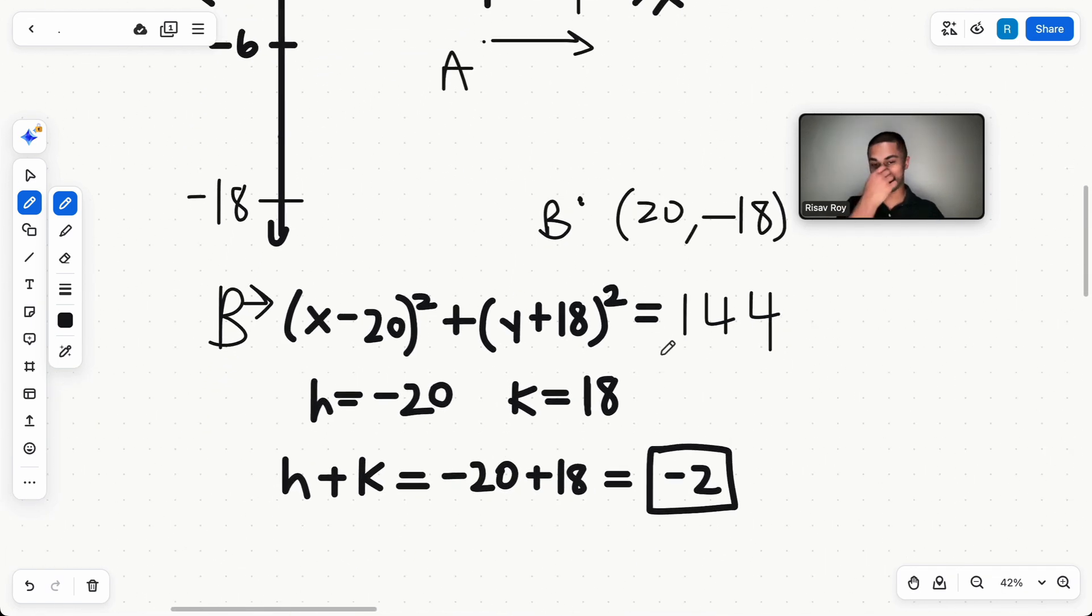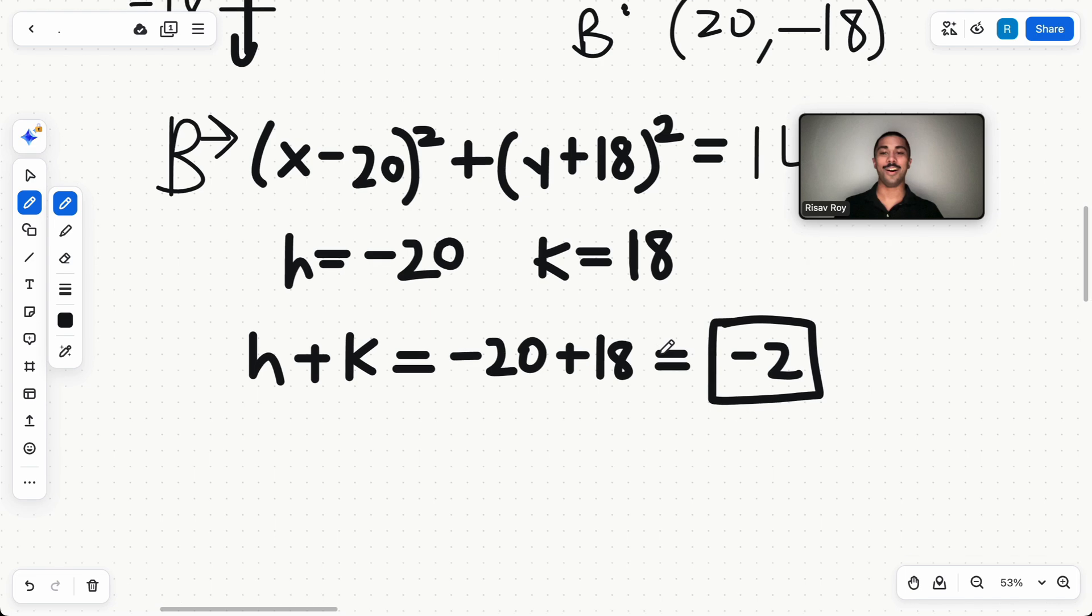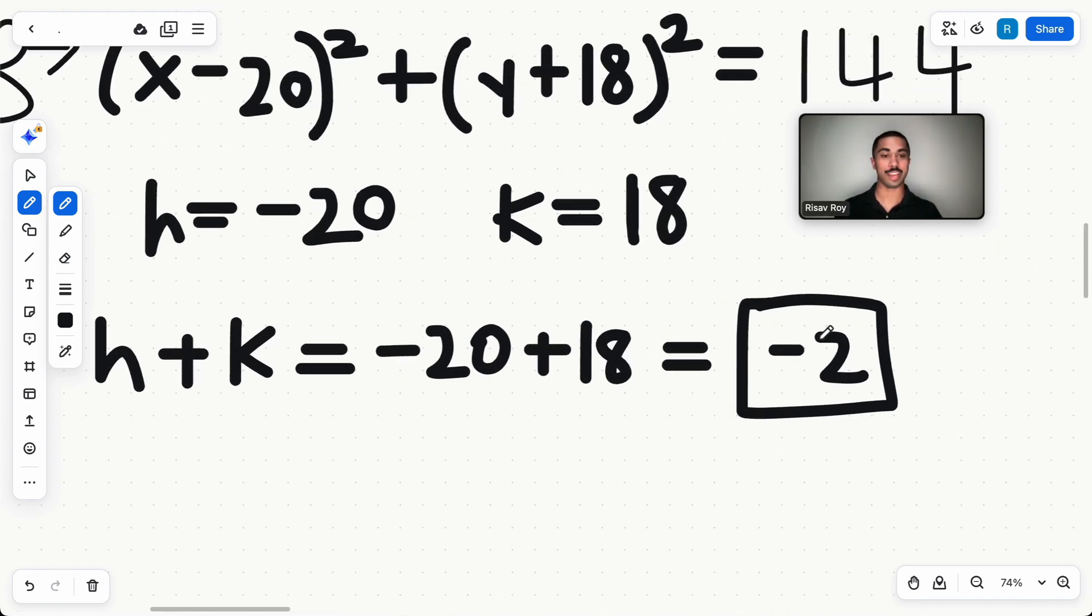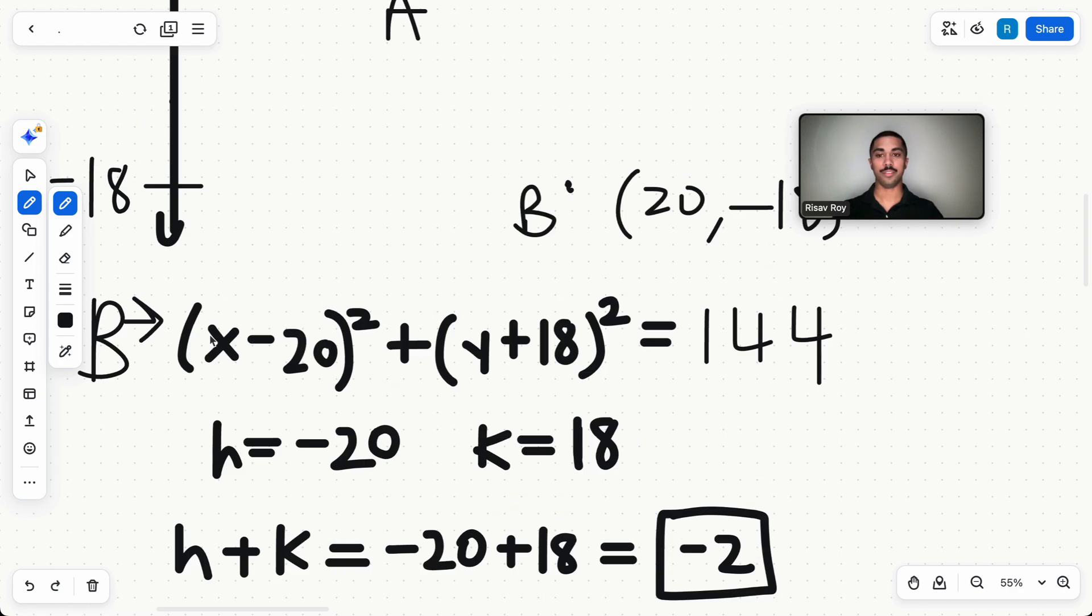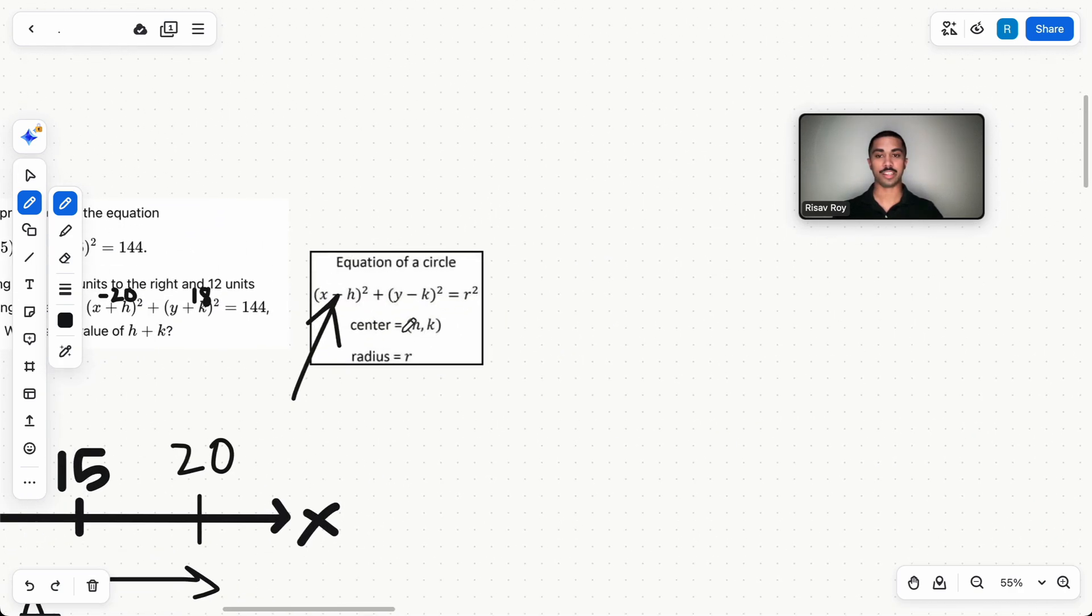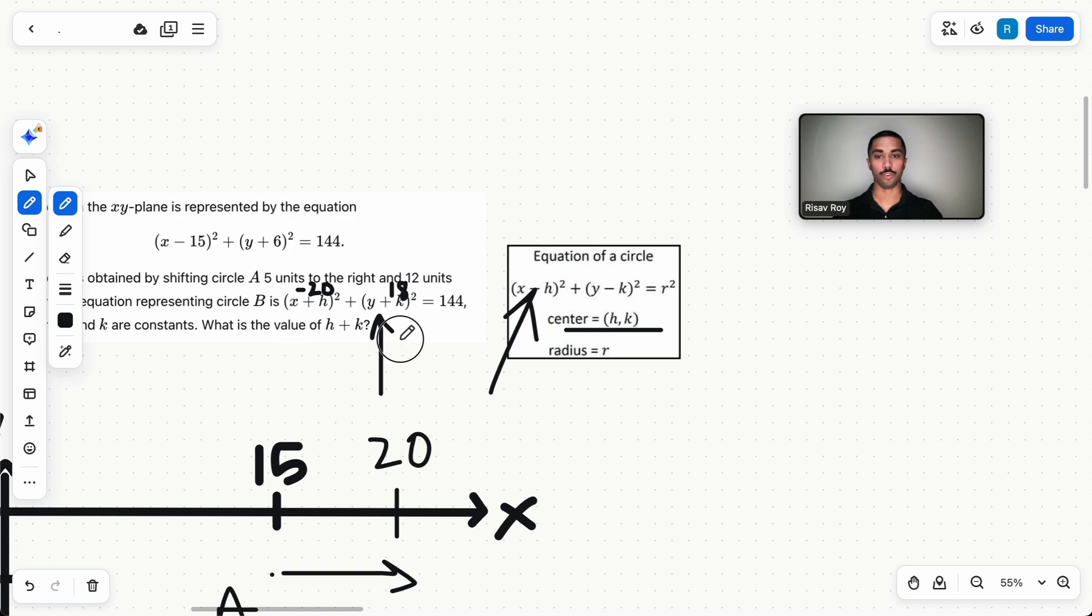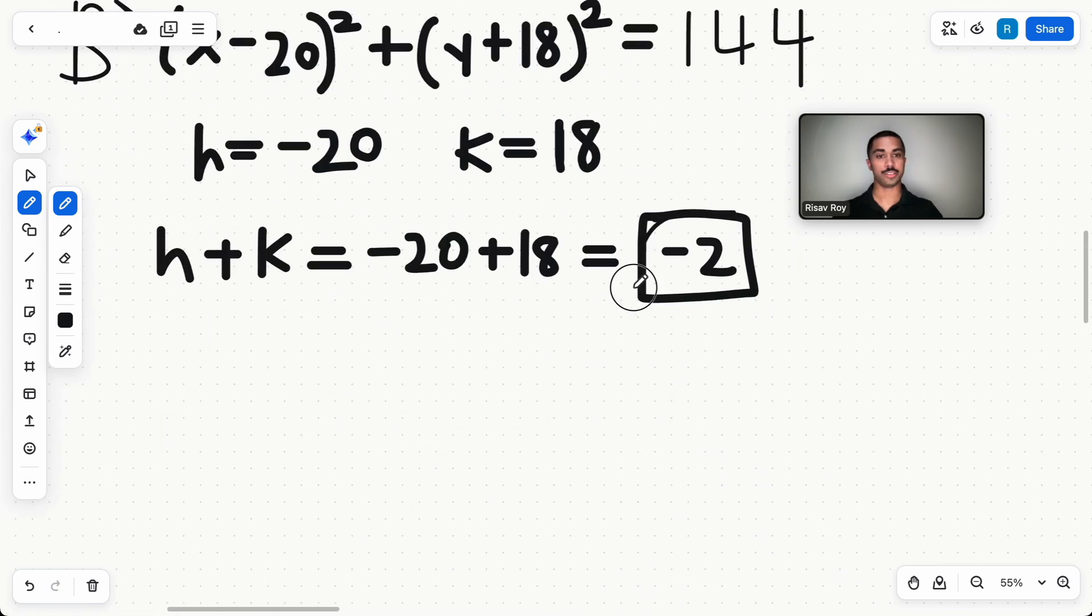Good thing we don't need the radius. All right. Well, that should have been 144, but it doesn't matter for this question. h + k is going to be -20 + 18, which is -2. Make sure that you don't get positive 2 by doing all of this work, getting to this point, and then finding h, k like you would normally do. Use the SAT's format, whatever it gives you. The answer is negative 2.